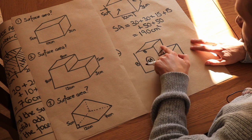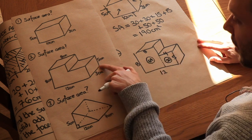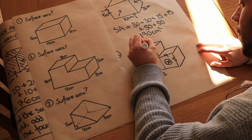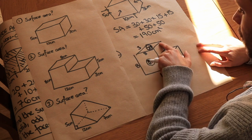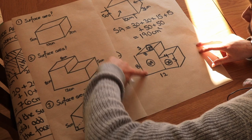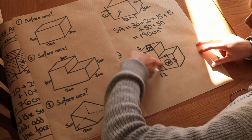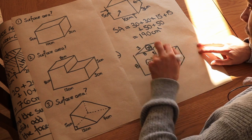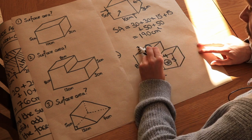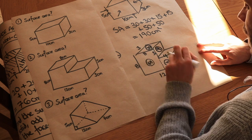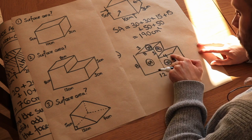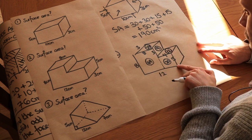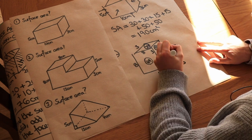Drawing the area on each face, the breadth is 3. The top face is 3 times 8, which is 24. A hidden edge is 8 minus 5 equals 3. That gives a small rectangle of 3 times 3, which is 9. Another rectangle is 4 times 3, which is 12. Another face is 5 times 3, which is 15.